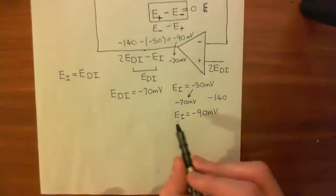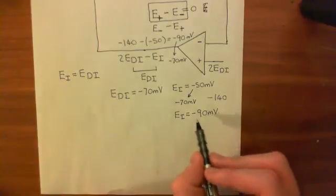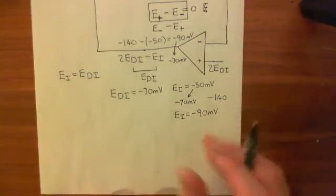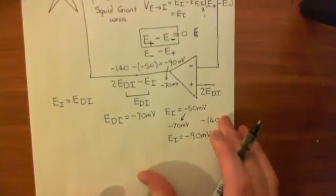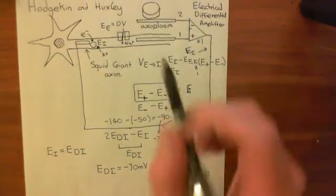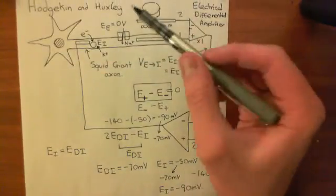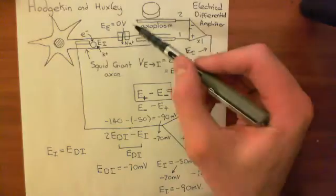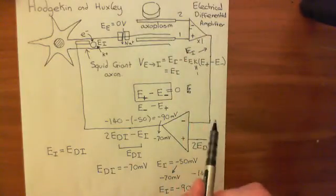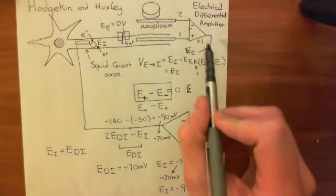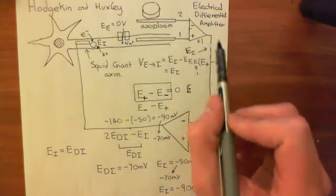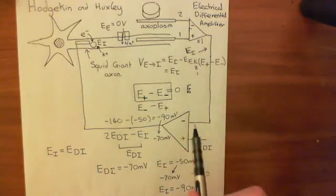Let's say the electrical potential of the intracellular compartment is negative 90 millivolts. We're assuming that the electrical potential of the extracellular compartment is still zero millivolts. So that means the electrical potential of this wire here is the same as the electrical potential of the intracellular compartment, i.e. negative 90.